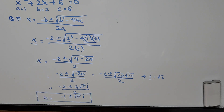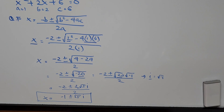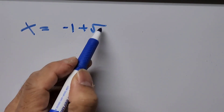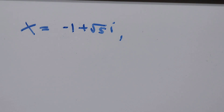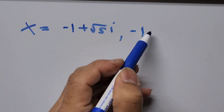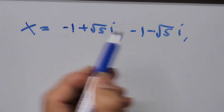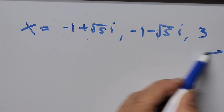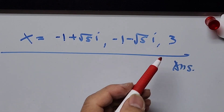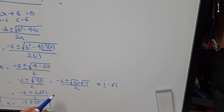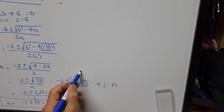So the three roots of x are: x equals negative 1 plus square root of 5 times i, x equals negative 1 minus square root of 5 times i, and x equals 3. Note that the square root of 20 simplifies to 2 square root of 5, which is a useful shortcut to reach the final answer directly.